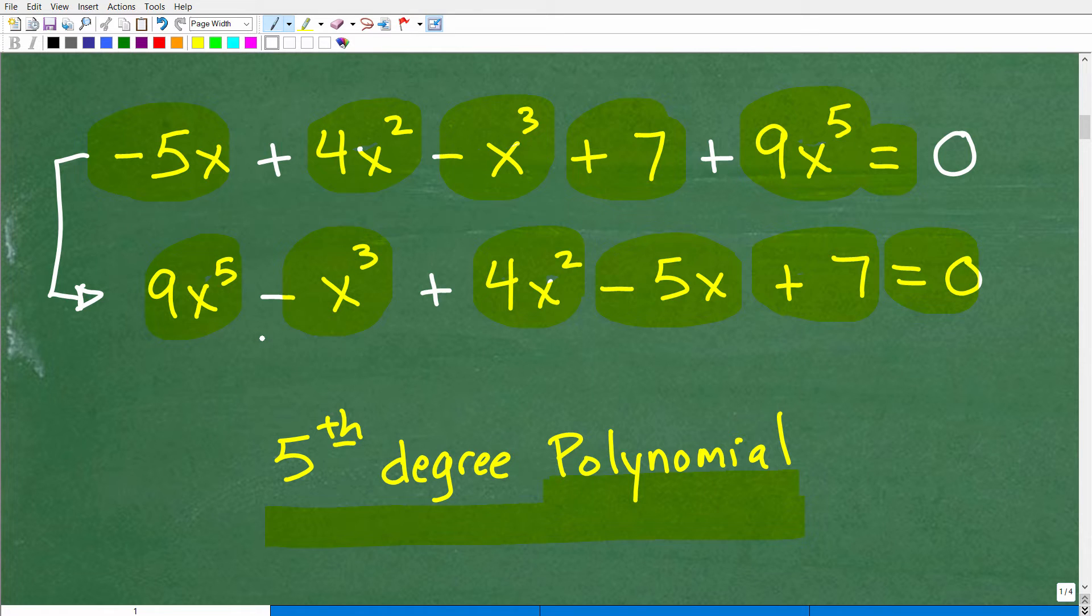By doing that, it's going to be quite obvious that this is what we call the leading term. This is the leading term of this polynomial equation. This is the leading coefficient. But here, notice I'm using the word degree. The highest power of this leading term is 5. So we would refer to this as a fifth-degree polynomial. Fifth-degree polynomial.